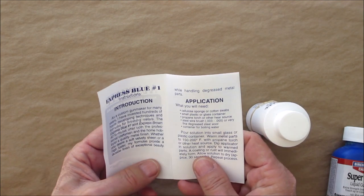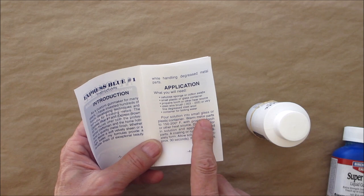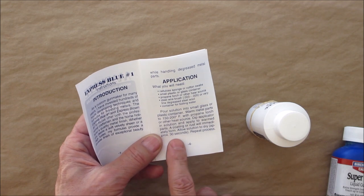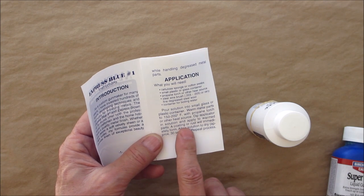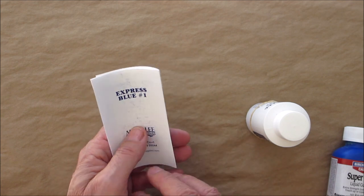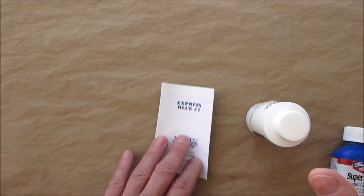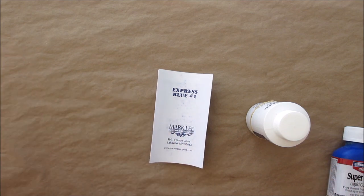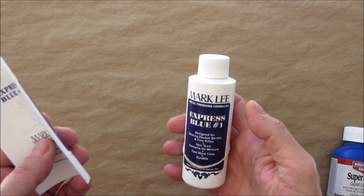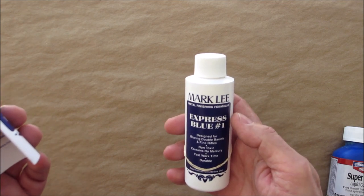I'm going to say like 250 degrees. Obviously with any of this stuff that you use, read the directions. So we got here, warm metal parts to 150 to 200 degrees. So what it's actually doing is it's actually rusting the metal. Instead of a red oxide, which we all know rust is like a reddish color, it's a black oxide.